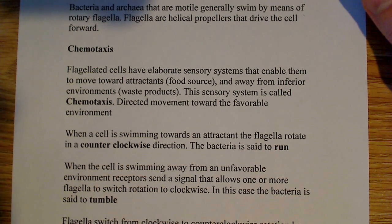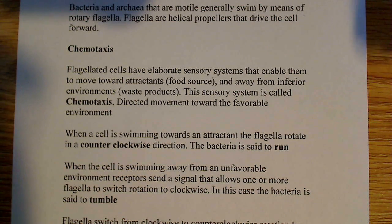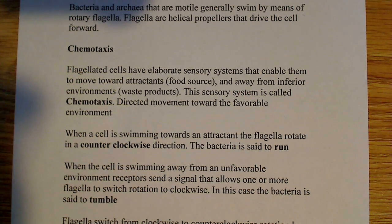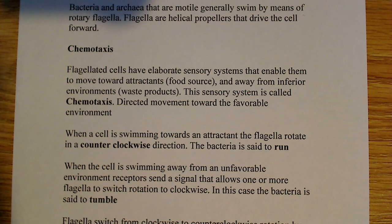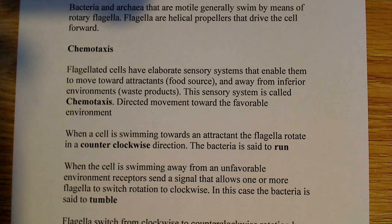These flagellated cells have elaborate sensory systems, and that's to be expected because you have to have a way of detecting your environment. The reason you need to detect your environment is you need to be able to move from place to place, location to location. Flagellated cells have elaborate sensory systems, and that's essentially what allows them to move toward attractants. In the case of attractants, we're usually talking about food sources or favorable environments — temperature ranges, salinity, etc.